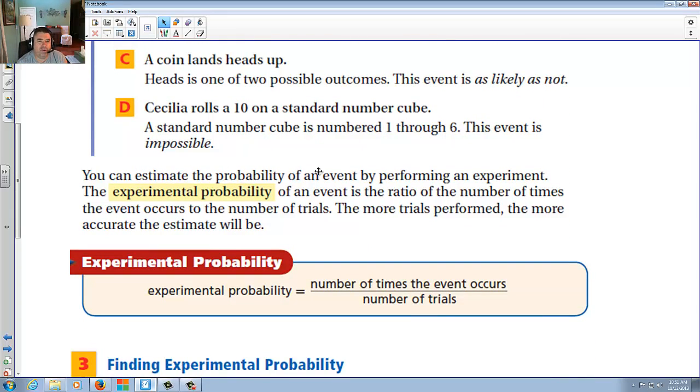You can estimate the probability of an event by performing an experiment. The experimental probability of an event is the ratio of the number of times the event occurs with the number of trials. The more the trials performed, the more accurate the estimate will be. In other words, experimental probability: number of times that an event occurs divided by the number of trials. For instance, if you flip a coin and you have a choice between heads or tails, you might flip a coin once that lands on heads. You'll say, wow, it landed on heads 100% of the time because you did it one time.